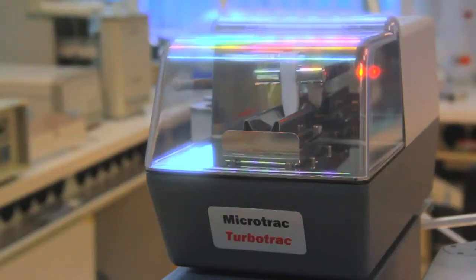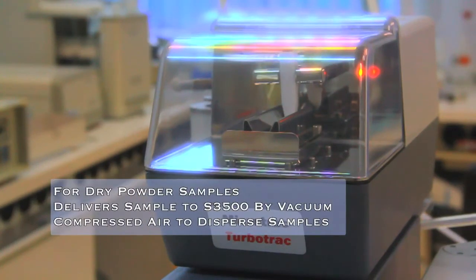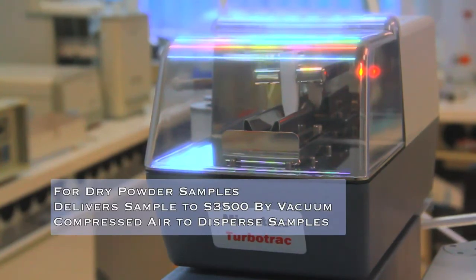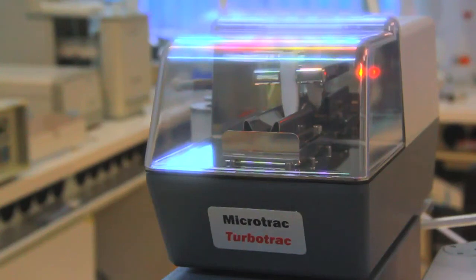The Turbotrack is a dry powder dispersion system that delivers a well dispersed powder sample to the S3500 for analysis. The powder is transported to the S3500 by vacuum and compressed air can be used to disperse highly agglomerated powders. The degree of dispersion can be controlled by pressure and inductor gap settings.